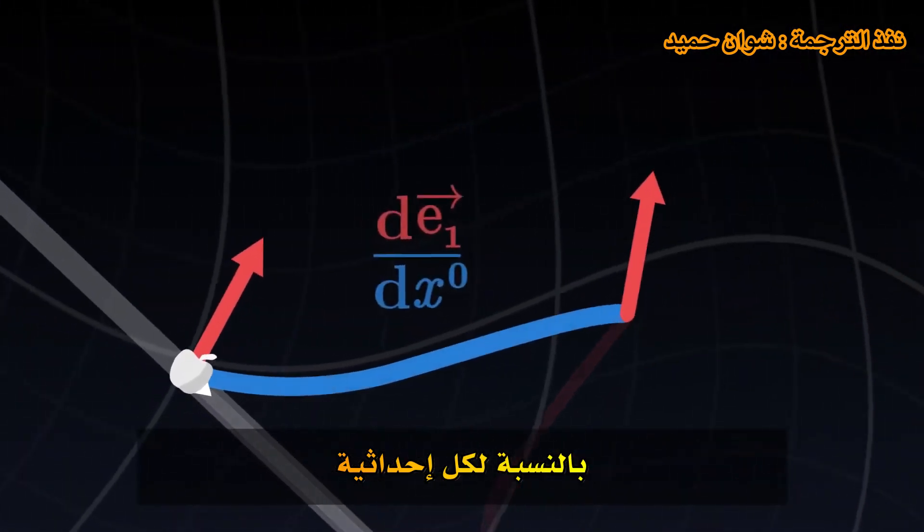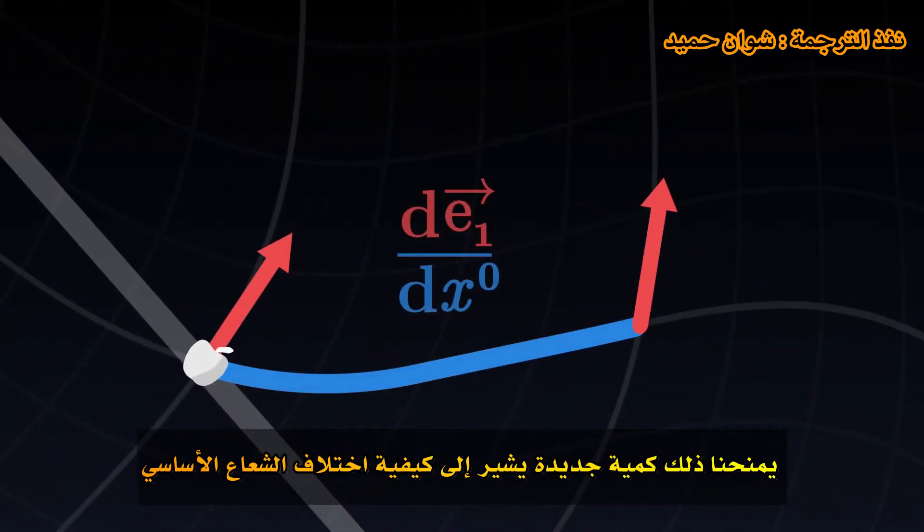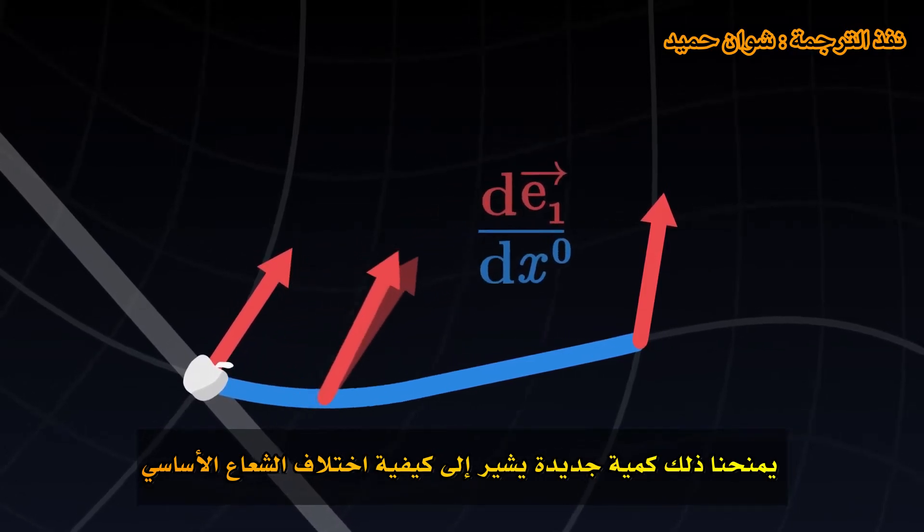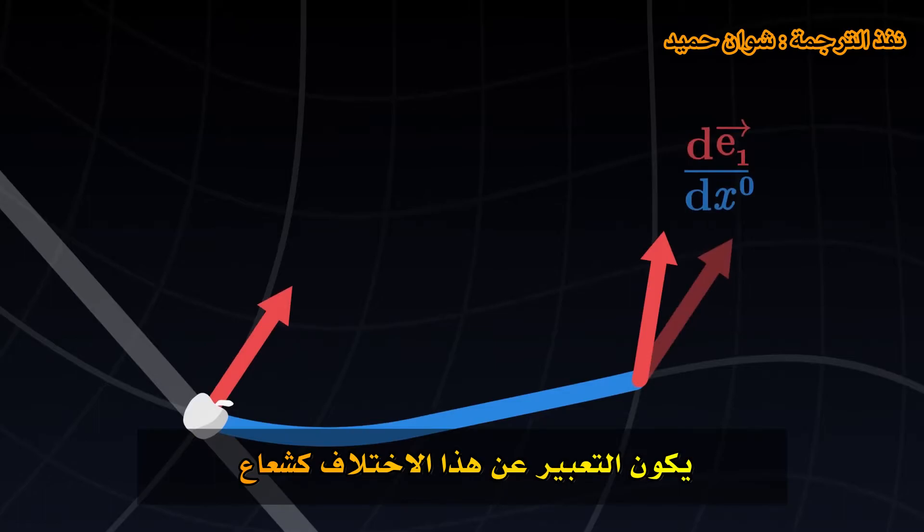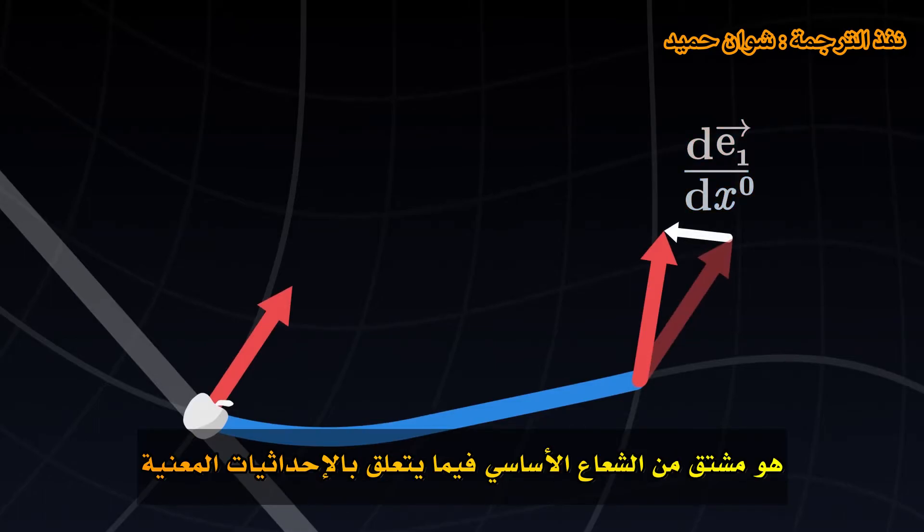For each coordinate, this gives us a new quantity which indicates how the basis vector varies along the coordinate. This variation is expressed as a vector, that is the derivative of the basis vector with respect to the coordinate in question.